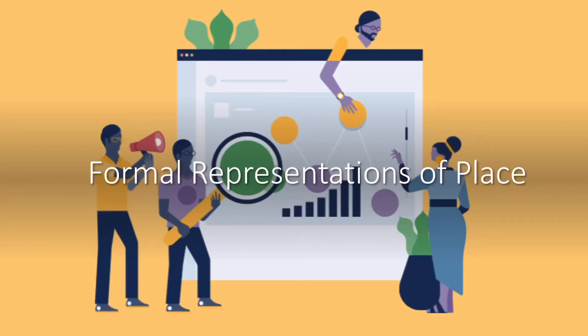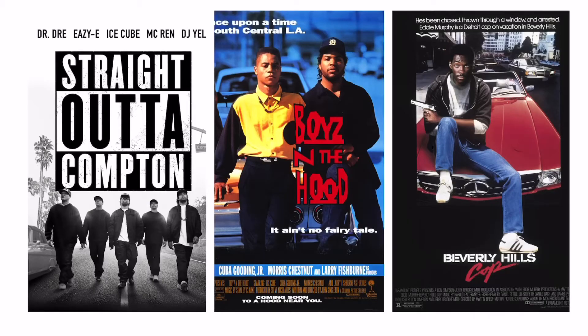Moving on to formal representations of place — these are more official sources of information, largely based on collecting lots of data and statistics. Here are some informal representations of the city of LA: Straight Outta Compton, Boyz n the Hood, and Beverly Hills Cop — they all talk about different areas of Los Angeles. In these pictures you could see a common thread: they feature ethnic minorities and areas that appear to have crime. But that only tells us the views of the people who made those films.